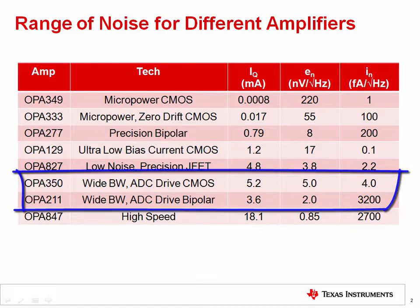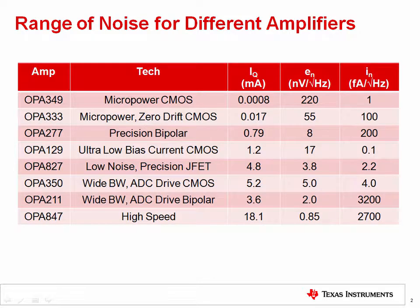Current noise, on the other hand, is not related to quiescent current. Current noise is lower for CMOS amplifiers than for bipolar amplifiers. Generally, you will notice amplifiers that have low bias current also have low current noise.